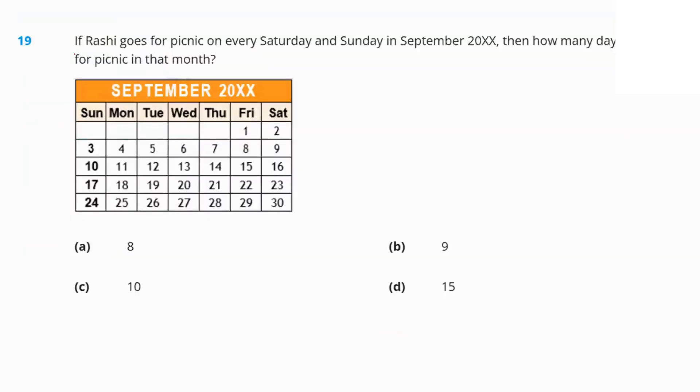Next, question number 19 says, if Rashi goes to picnic on every Saturday and Sunday in the month of September, then how many days did she go for picnic in that particular month? How many Saturdays? One, two, three, four and five Saturdays. And how many Sundays? Four Sundays. So, five plus four, nine days she went to the picnic. So, nine is the answer. Option B.